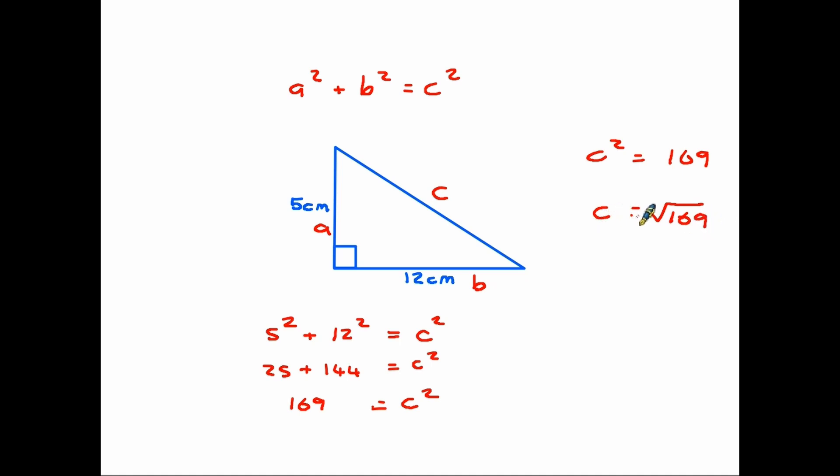If you're not sure about roots and squares, have a look at that little topic first, that might just help you along with this part of the calculation. The square root of 169 is in fact 13. Therefore, C equals 13, and we have the length of our third side, 13 centimeters.